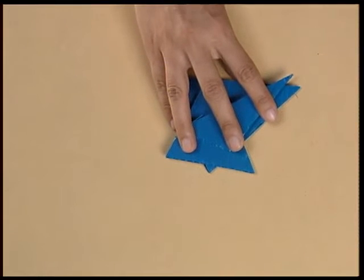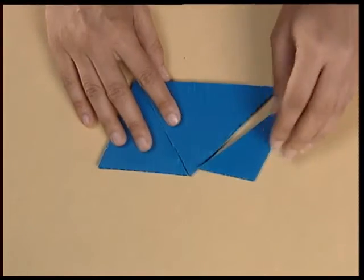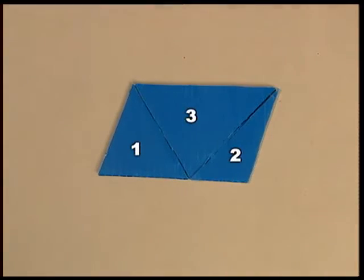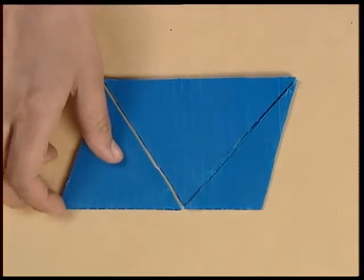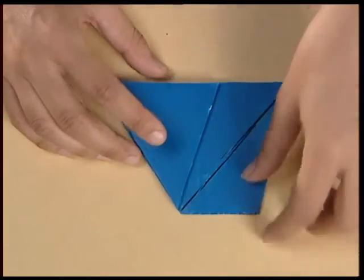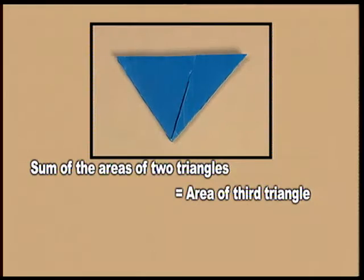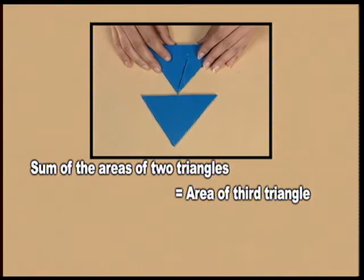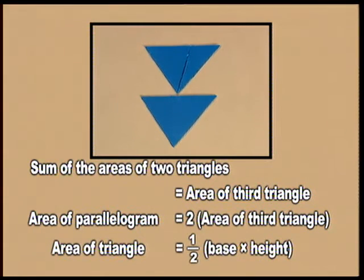Let us now perform another activity to find the area of a triangle. We use three triangular pieces to form a parallelogram. Now place the two small triangles over the third triangle. We observe that the area of the two small triangles is the same as the area of the third triangle. Thus the area of the parallelogram is twice the area of the third triangle, and the area of the triangle becomes half the area of the parallelogram, which is half into base into height.